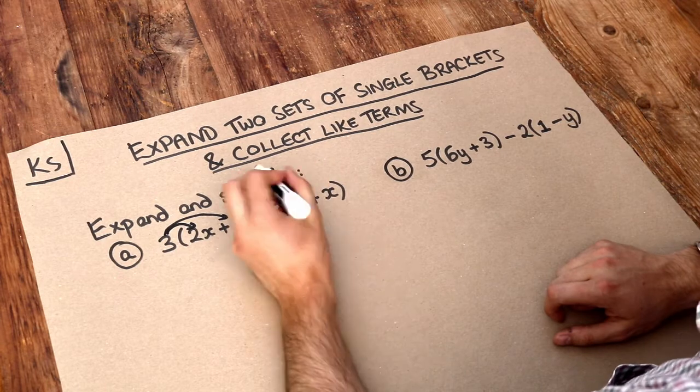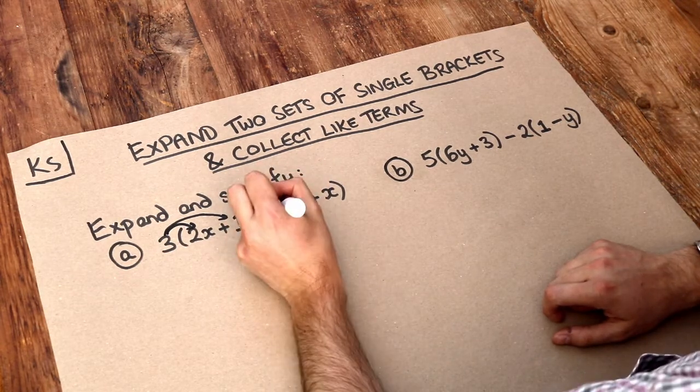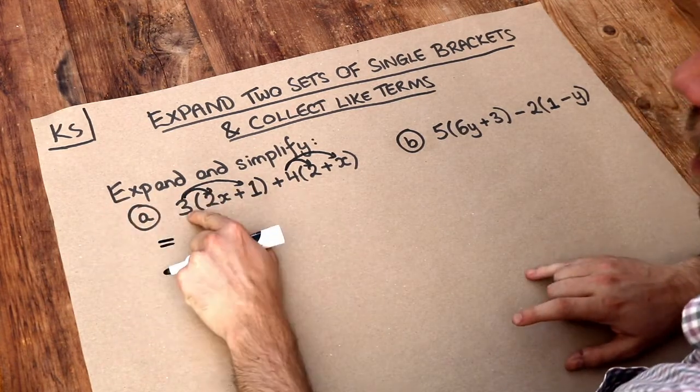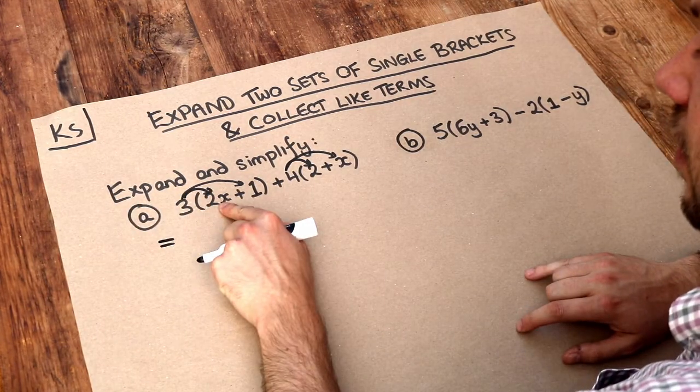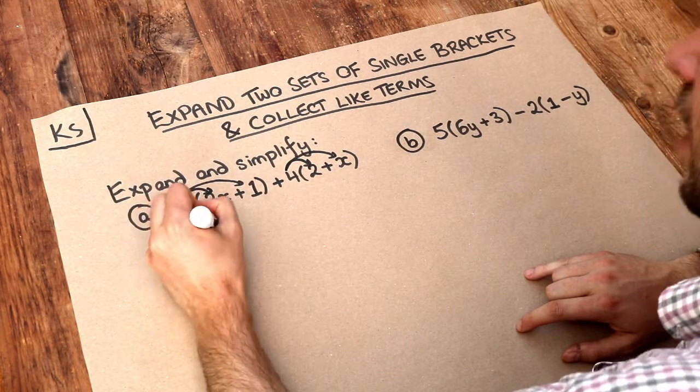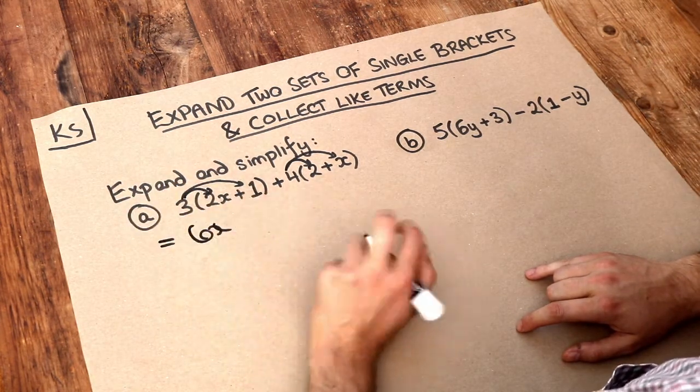And similarly this 4 here we're going to multiply it by the first thing in the bracket and by the second thing in the bracket. So if we actually do that, 3 times 2x, or 3 times 2 is 6, so it's 6x and 3 times the 1 is plus 3.